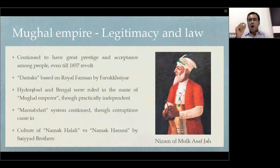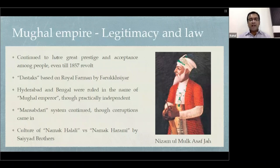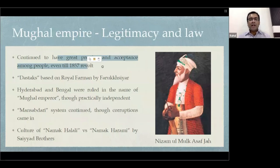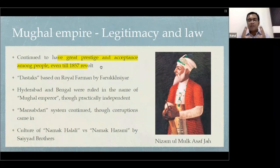Legitimacy comes through law and socially sanctioned legislation. Due to the strong rule of rulers like Akbar and Jahangir, the Mughal Empire enjoyed great prestige. In fact, it is due to this prestige that even though they became weak, their rule continued till 1857. The Mughal Empire's legitimacy was very strong, and this was perhaps the only saving grace for the Mughal Empire.